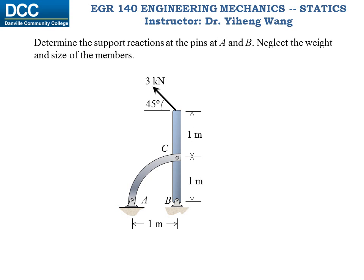Let's look at this example. We need to find the support reactions at pins A and B. If we want to treat this assembly as one system and draw only one free body diagram, then since there are two force reactions associated with each pin support, together we will have four unknowns, but we can only write three independent equations, and that won't be enough to solve for all unknowns. But we can solve this problem by analyzing each member separately.